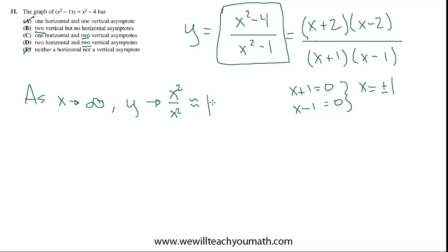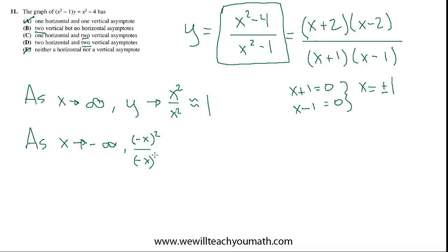So we have a horizontal asymptote of y equals 1 as x approaches infinity. We also have to examine what happens as x approaches negative infinity. Negative infinity squared is the same as infinity squared, so the same logic applies: we neglect the constant terms, focus on the high-order terms in numerator and denominator, and they both get infinitely large. It still tends toward 1. So y equals 1 is the only horizontal asymptote.